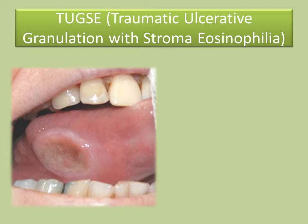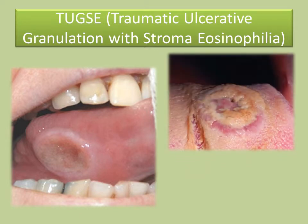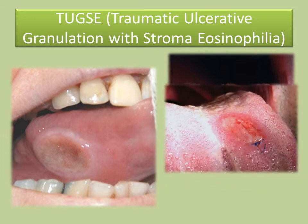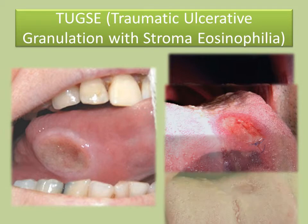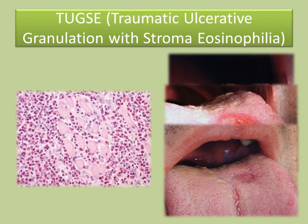Now I will show a set of photos from a case report. A large ulcer of the dorsum of the tongue with raised rolled borders, one week post-biopsy, and two months after biopsy showing good healing. A histological slide of H&E stain shows inflammatory infiltration composed of eosinophils, histiocytes, and lymphocytes.